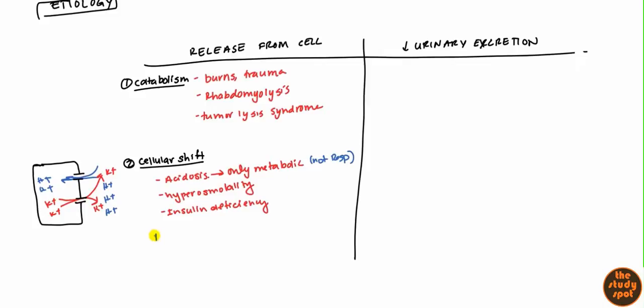There are also some drugs that can cause potassium to move out of the cell. These include digitalis, which is a sodium-potassium channel blocker, and beta blockers — remember, beta-2 agonists cause potassium to go into the cell, so if you have beta blockers they won't do that. You can also have RBC transfusions, because the RBCs can sometimes hemolyze inside the body and cause hyperkalemia.